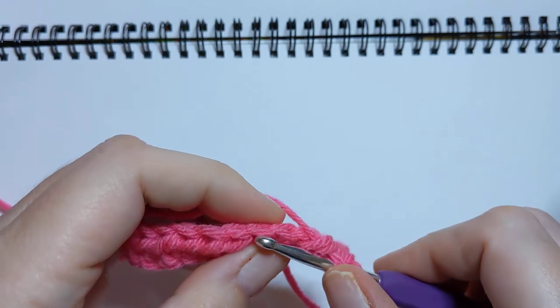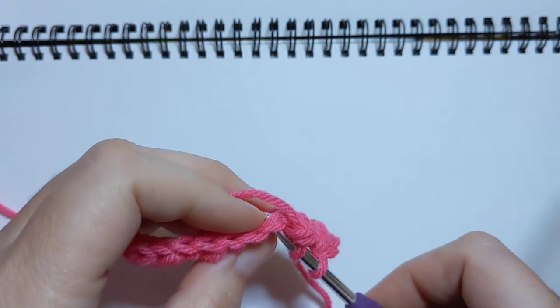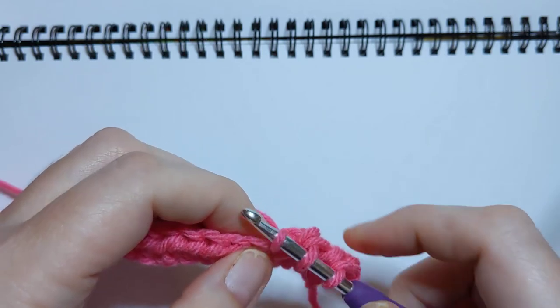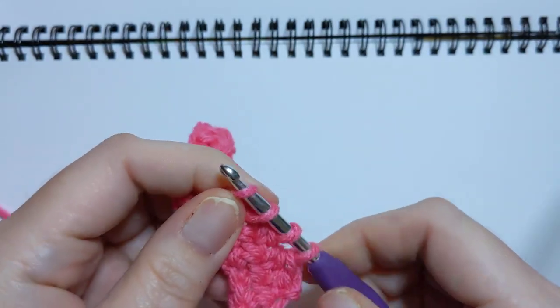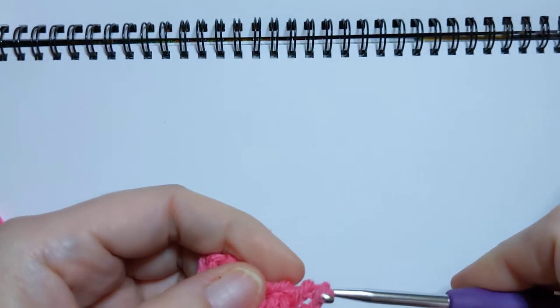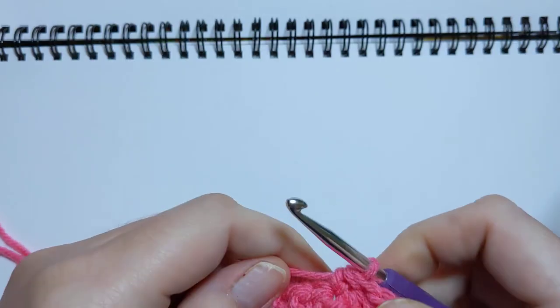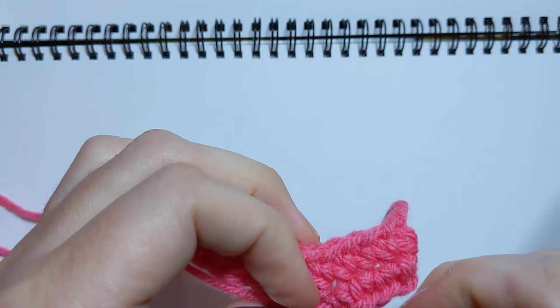Then we're going to go into the next stitch, put your hook through, pull up a loop—back to having three on the hook—and pull through all three. We have just crocheted two together.